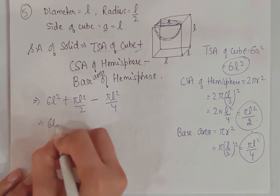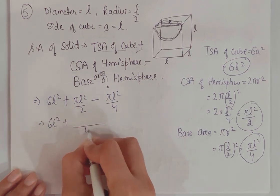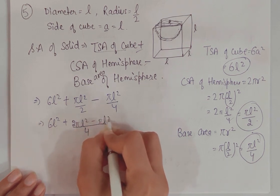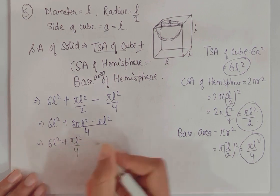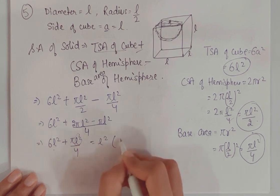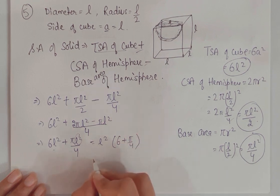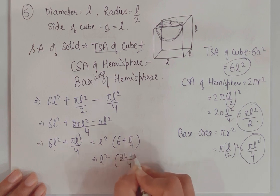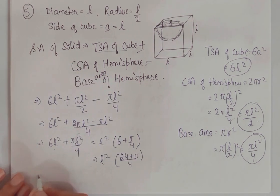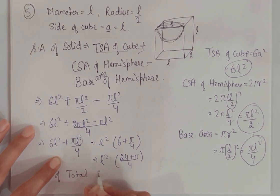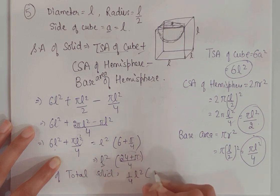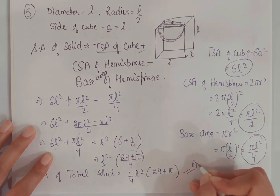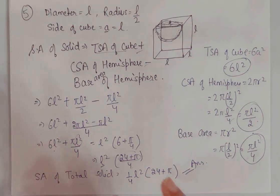Solving it: take LCM of 2 and 4, which is 4. So we get: (2πL² − πL²)/4 = πL²/4. Adding to 6L²: take L² common — L²(6 + π/4). Taking 4 as common denominator: L²/4 × (24 + π). So the surface area of the remaining solid is L²(24 + π)/4. Question 5 is essentially the same as question 4 — just with variables instead of numerical values.